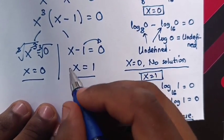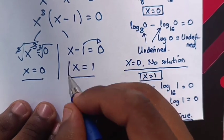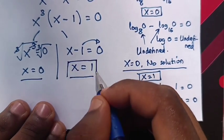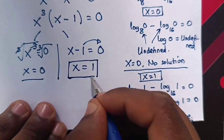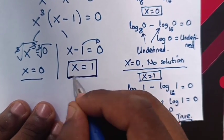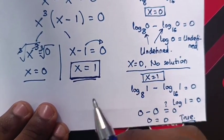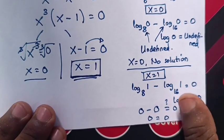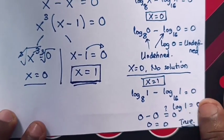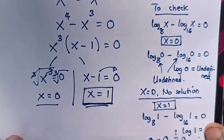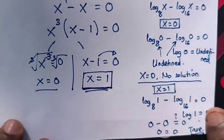Therefore, x is equals to 1 is the correct answer. Don't forget these steps — make sure not to miss them out.